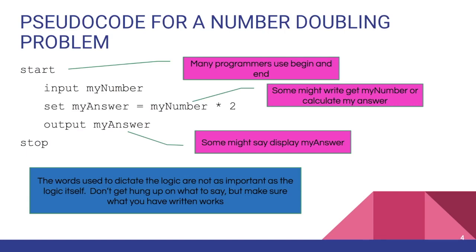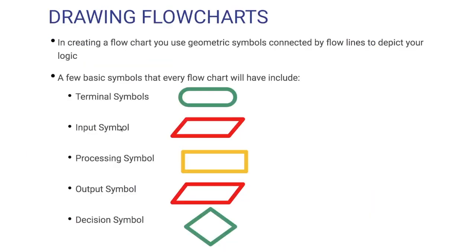Here's an example of a number doubling problem. We would want to input 'my number' — my number being the variable I'm going to store. I'm going to set 'my answer' equal to my number times two, so I'm doubling the number, setting it to my answer, and then outputting the answer. It's a pretty simple bit of logic.